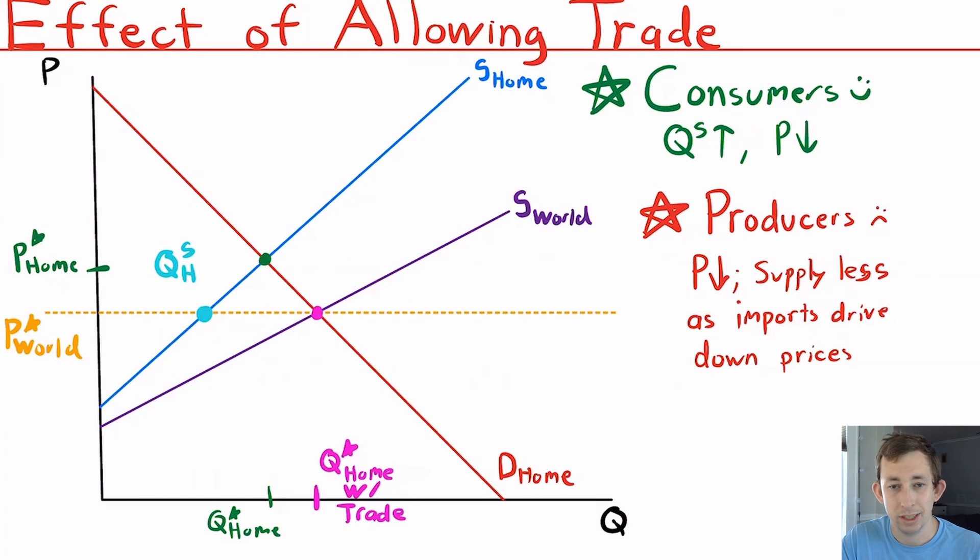But if we allow people to sell donuts in our town who are from different towns, we're going to have a different supply curve. So here's the world supply curve. You can see that it's a little flatter—that's because there are more sellers worldwide, so they're more responsive to price.